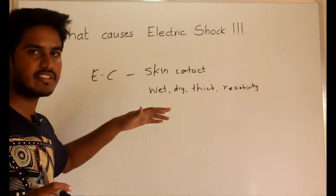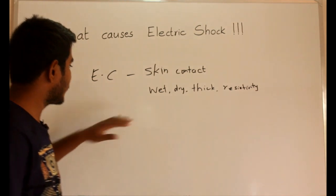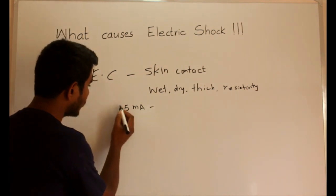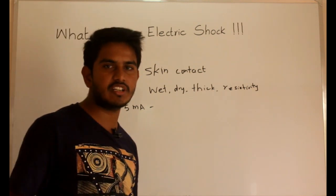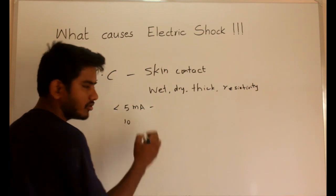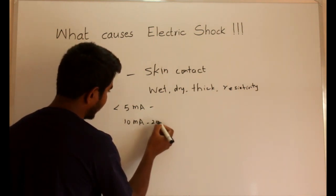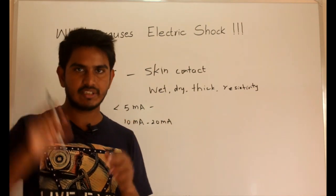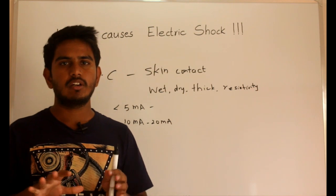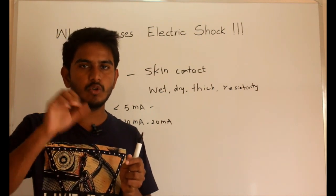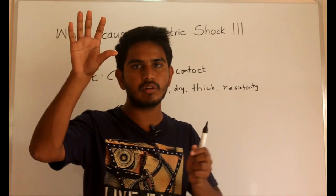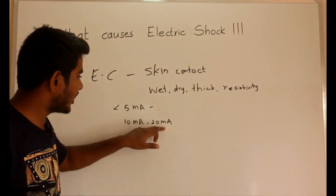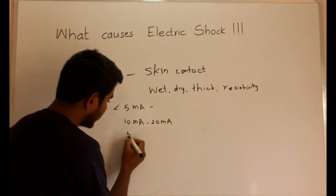If we classify the currents which are potentially dangerous and which are fatal to the human body: currents below 5 milliamperes are not potentially dangerous to the human body. If the current flowing through the human body is between 10 milliamperes and 20 milliamperes, then it is potentially dangerous because the victim loses muscular control. When you touch the electric wire, there will be contractions in your body and this prevents you from letting go.